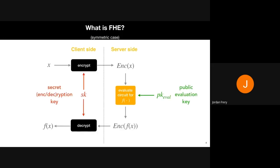FHE aims at providing privacy for the user. Taking the spam detection example again: you take the mail, encrypt it locally at the client machine, and send this encrypted data point to the server. Thanks to fully homomorphic encryption the server is able to execute the same function as it would on clear data, and sends back the encrypted result. The result is also encrypted, and only the client, which has the private key used to encrypt the data, can decrypt the result of the function executed on the server.